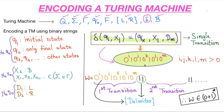This single transition function will be represented in binary format because Turing machine encoding is in binary strings. I will represent it as: 0^i 1 0^j 1 0^k 1 0^l 1 0^m. Here, '1' is used as a delimiter to separate the components within a single transition function.